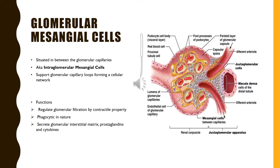Glomerular mesangial cells are the mesangial cells lying inside the glomerulus, in between the glomerular capillaries. Hence, they are also known as intraglomerular mesangial cells. They support the glomerular capillary loops by surrounding the capillaries in the form of a cellular network. They play an important role in regulating glomerular filtration by their contractile property. They are phagocytic in nature and secrete glomerular extracellular matrix, prostaglandins, and cytokines.